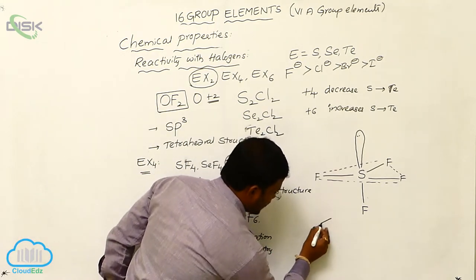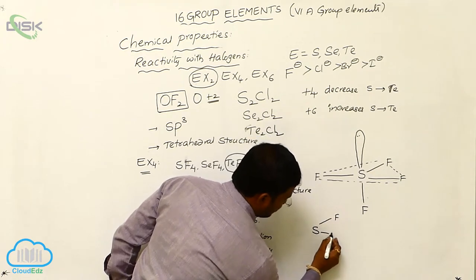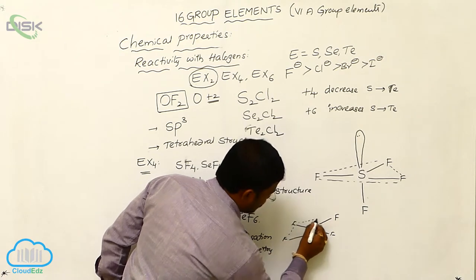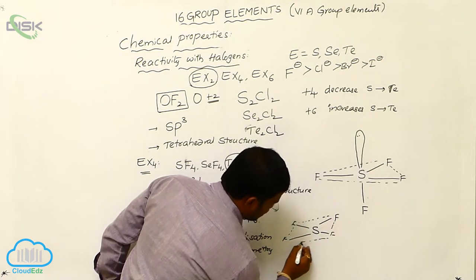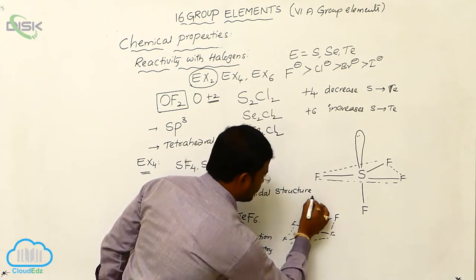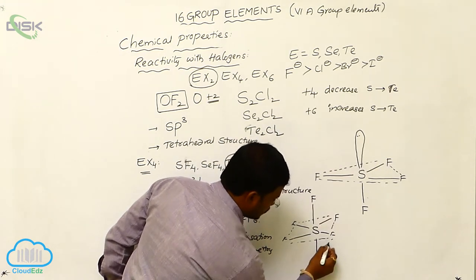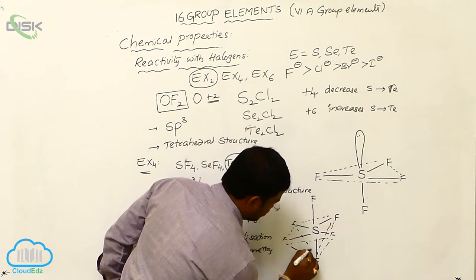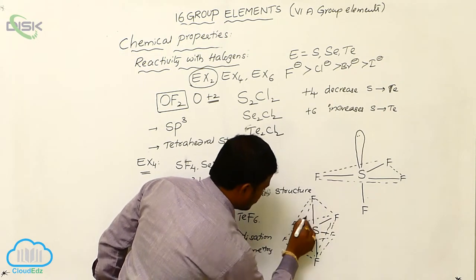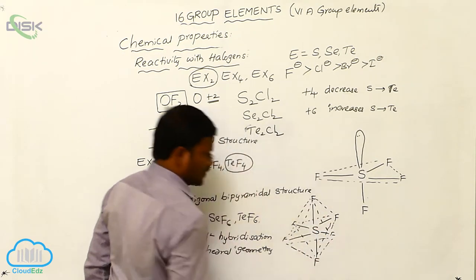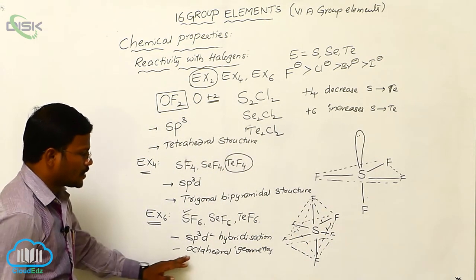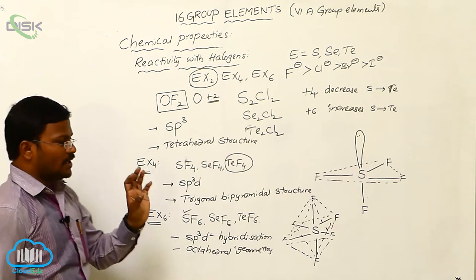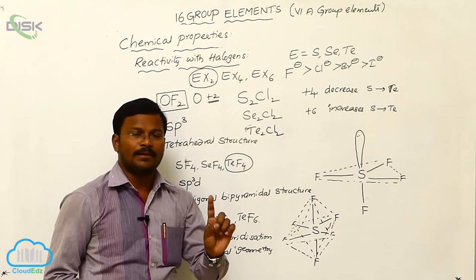The geometry that sulfur hexafluoride exhibits is octahedral, with fluorine atoms arranged around the central sulfur atom. This octahedral geometry is the expected structure resulting from sulfur hexafluoride due to SP3D2 hybridization.